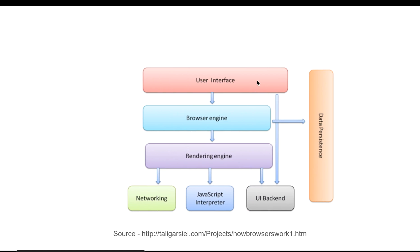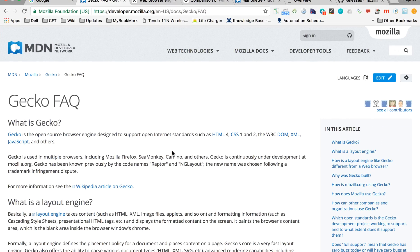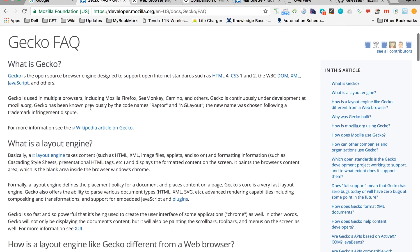If you look at this picture, we have a user interface at the top, which is where the user interacts with the browser, and at the bottom we have the backend components. In the middle we have the browser engine and the rendering engine, which is used to control and render the content on the browser — this is exactly where the Gecko browser engine fits into the picture.